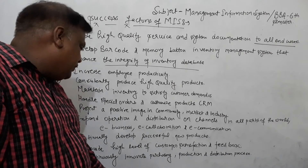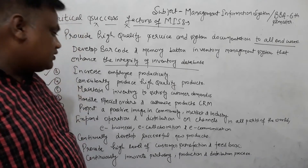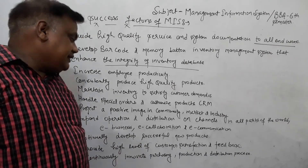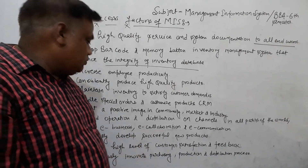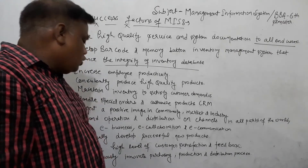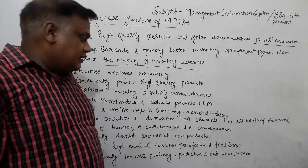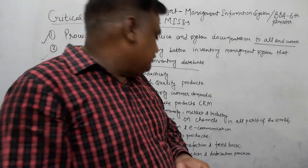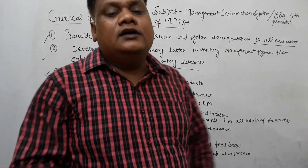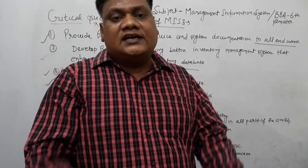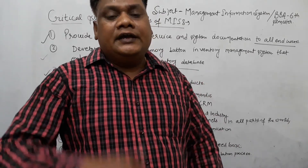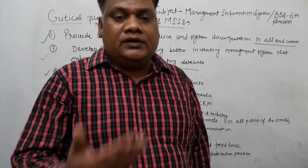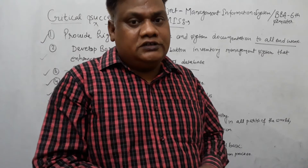Continuously innovate the purchasing, production, and distribution process. We need to control and balance it continuously across these three departments.